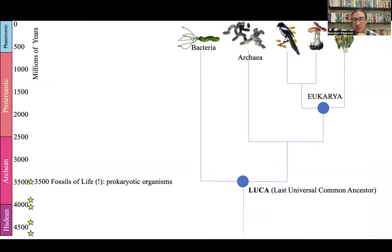Now we're going to get into more of the biology and phylogeny of life. What you're looking at is an evolutionary tree with living organisms at the top: bacteria, an archaean, and then a couple of different eukaryotes. You guys are eukaryotes, plants are eukaryotes, fungi are eukaryotes, and animals are eukaryotes.